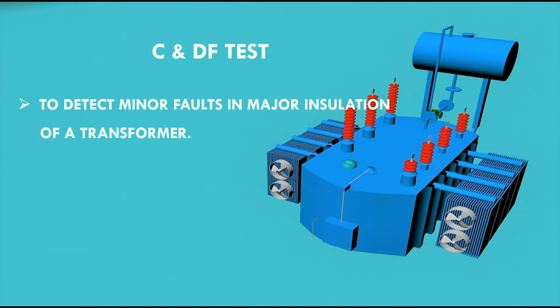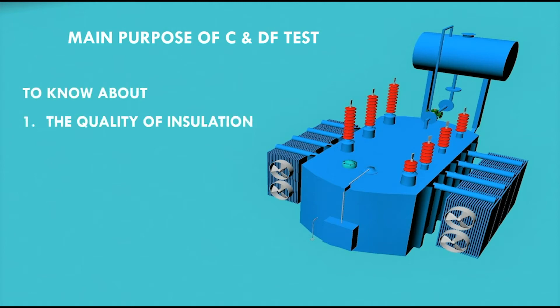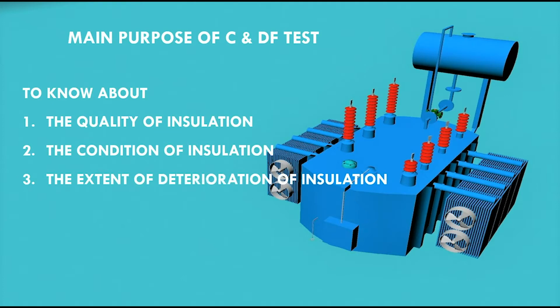The C and DF test is used to detect minor faults in major insulation of a transformer. What is the main purpose of C and DF test? The main purpose is to know the quality of insulation, the condition of insulation and the extent of deterioration of the insulation of the transformer.